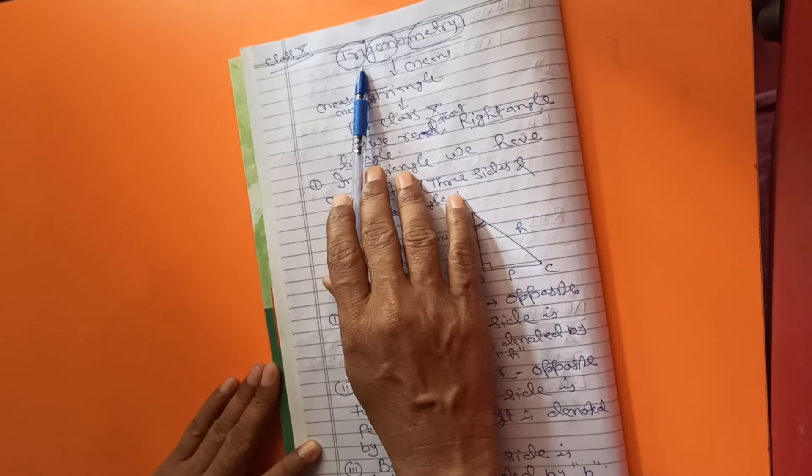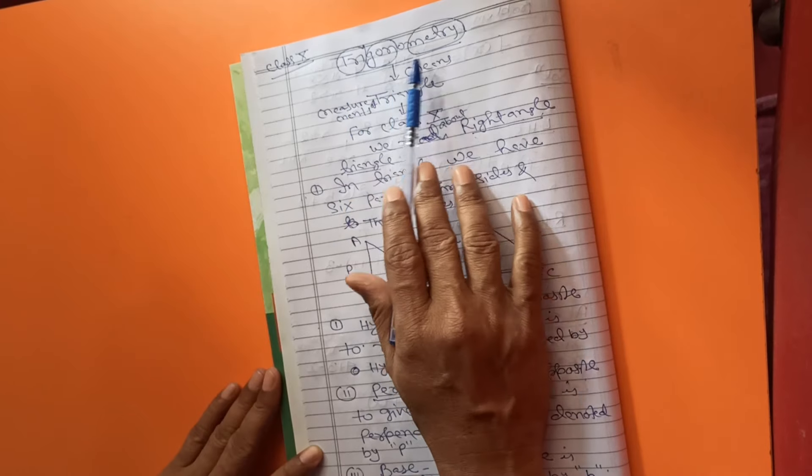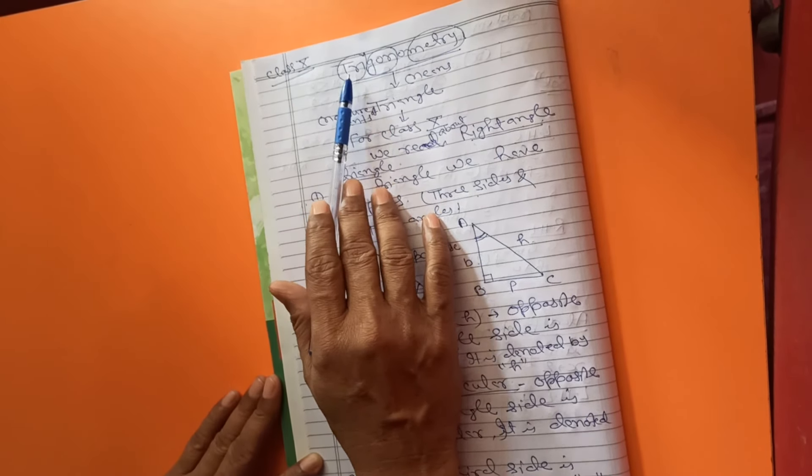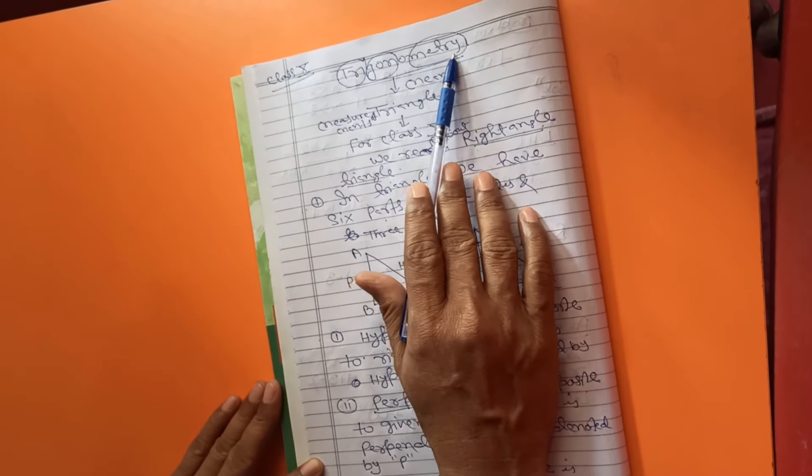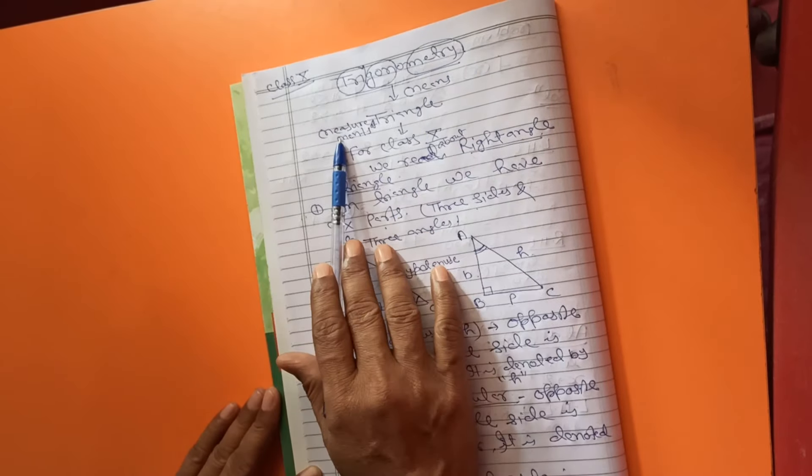And now we start trigonometry. First of all, what is the meaning of trigonometry? Tri means three, gon means side, metri means measurement. The meaning of trigonometry is measurement of triangle.